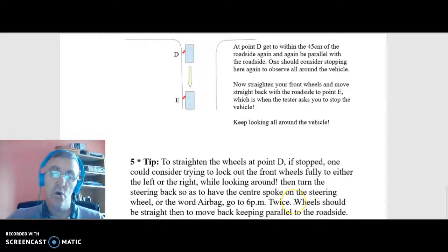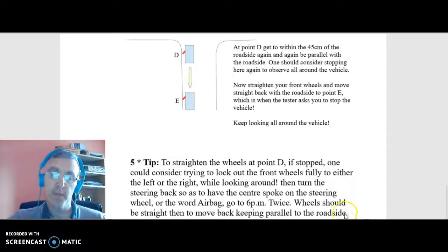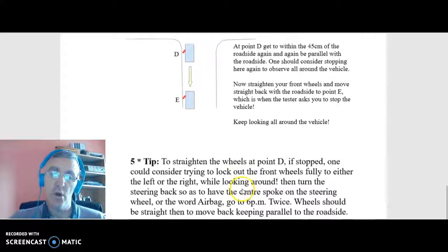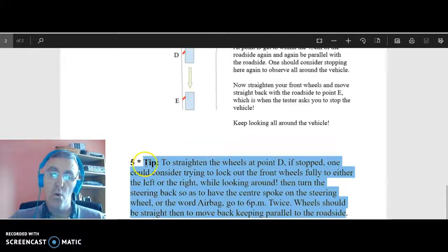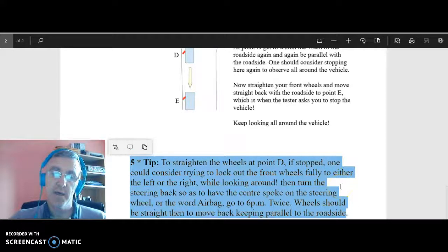At this stage the wheels should be straight, and then you should be able to move straight back along the curb. In actual fact folks, this five star tip here will actually work whenever you're doing a maneuver anywhere and you want to get the front tire straight so that you're moving in a straight line either forward or backward.